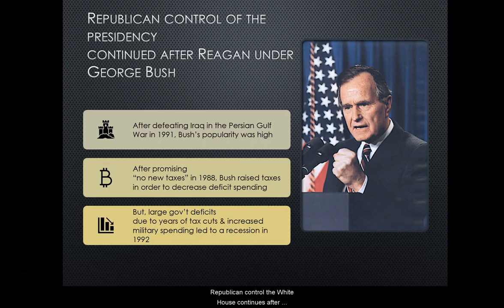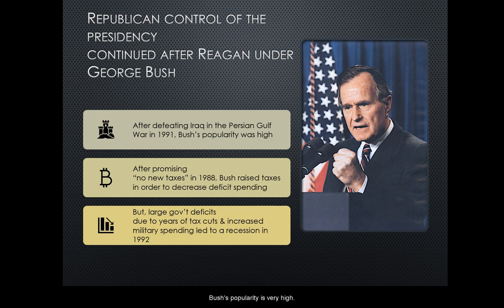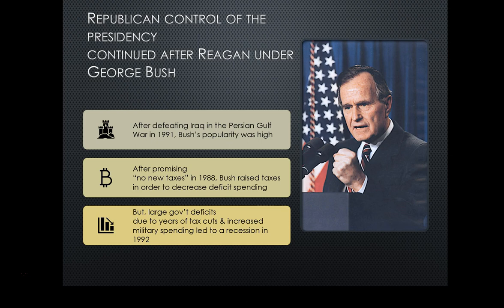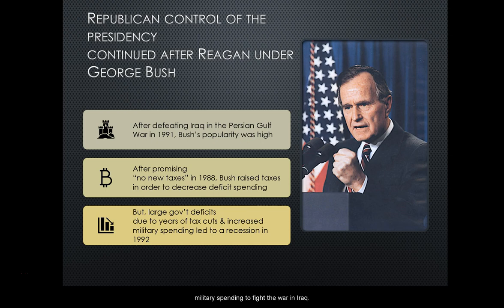Republican control of the White House continues after Reagan leaves office under his vice president, George H.W. Bush. After defeating Iraq in the Persian Gulf War in 1991, Bush's popularity is very high. However, he comes into the presidency in an economic situation where Reaganomics has cut taxes for years. We've increased military spending under both Reagan and George H.W. Bush because he had to increase military spending to fight the war in Iraq.